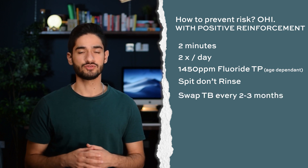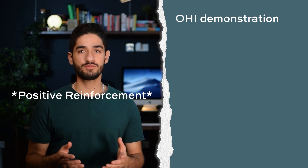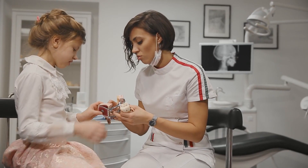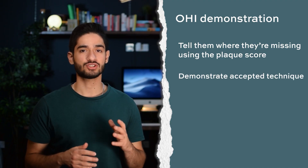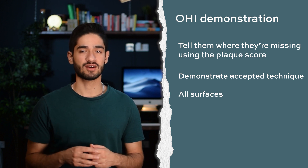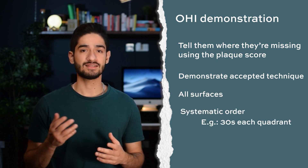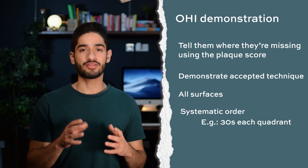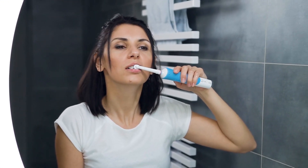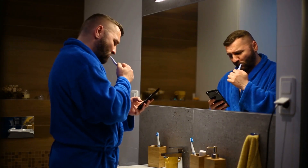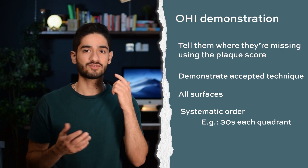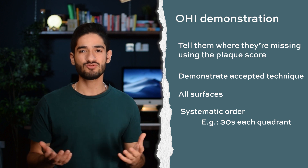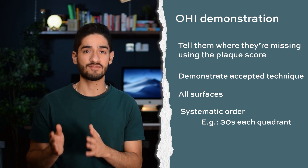Looking at your plaque score, it's actually pretty good, but I think we can reduce it further by showing you on the model how to remove plaque more effectively. I would then demonstrate the modified Bass technique — brushing the outer surface, inner surface, and biting surface in a systematic order towards where the gum and teeth meet. I divide the mouth into four quadrants, brushing each quadrant for 30 seconds. Electric toothbrushes conveniently have 30-second timers; otherwise I tell patients to use a phone timer. They start with one quadrant, then move to the next, covering all surfaces — it doesn't matter which quadrant they start with as long as every single one is covered.